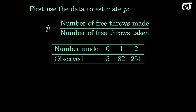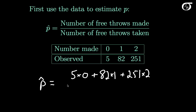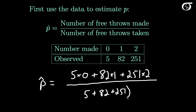We'll estimate his true probability of success with the proportion of free throws he made: the number of free throws made over the total number taken. Our p-hat equals — on 5 occasions he made 0, so the numerator starts with 5×0; on 82 occasions he made 1, so we add 82×1; on 251 occasions he made both, so we add 251×2. The denominator is (5+82+251)×2, the total free throws taken. Working this out gives p-hat = 0.864.